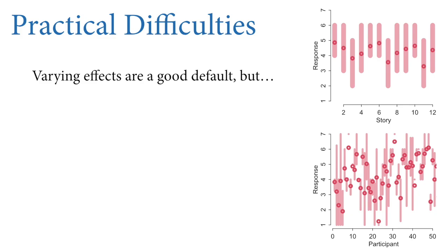That's why we use multi-level models — models that learn the shape of the prior from the sample — because they make better estimates, better predictions, and better predictions of causal effects as well. These are great tools, great glassblowing devices. But they come with practical difficulties, and I want to spend this lecture talking about those. We're not introducing new model types; instead we're going to practice what we met last week.